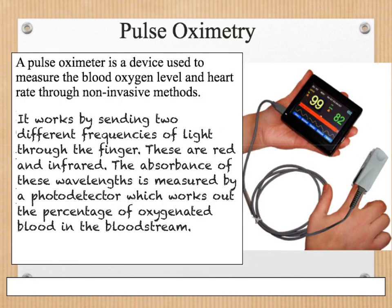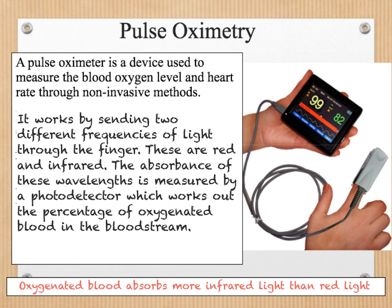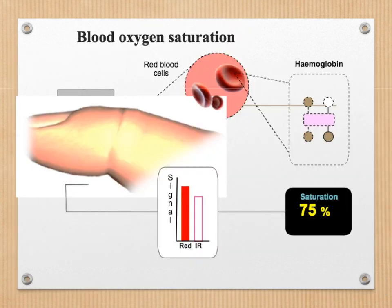We also need to be aware of pulse oximetry. A pulse oximeter is a device used to measure the blood oxygen level and heart rate through a non-invasive method — we can see it clips onto the finger. It works by sending two different frequencies of light through the finger: red and infrared. The absorbance of these wavelengths is measured by a photodetector. Oxygenated blood absorbs more infrared light than red light, whereas deoxygenated blood absorbs more red light than infrared light. We can use this information to determine the level of oxygenated blood in the body, and depending on the ratio of red to infrared light picked up by the photodetector, we can work out the saturation of oxygen in the blood.